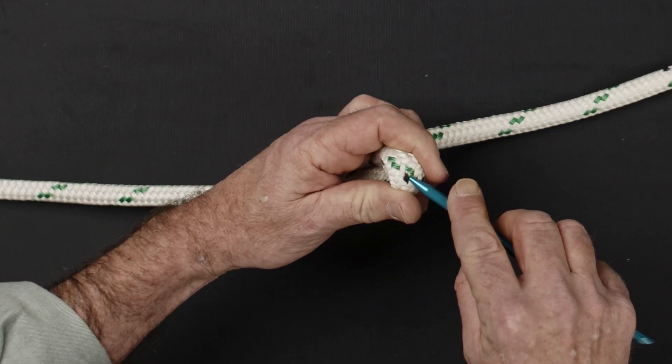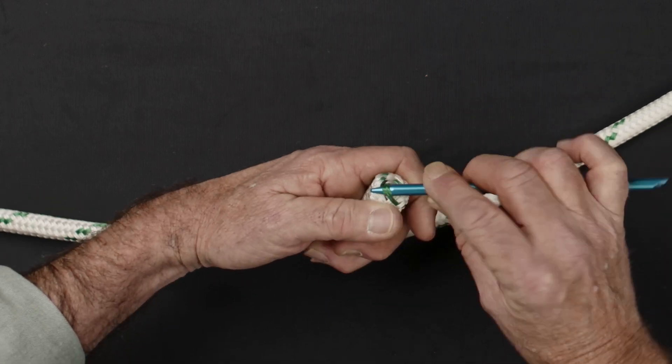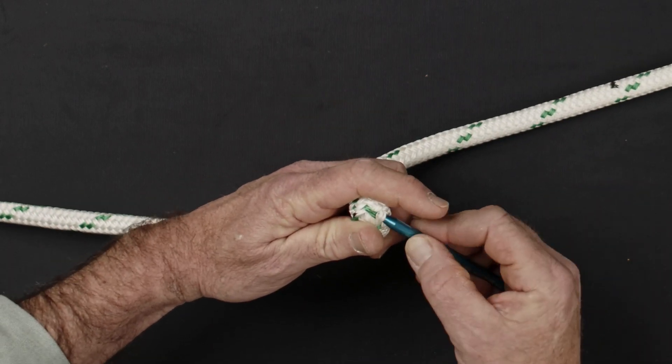At the second eye mark, use your FID to open up the cover of the rope and extract the core. Be careful not to split or snag any of the sleeve ends while doing so.